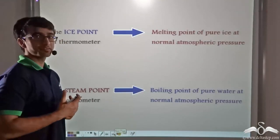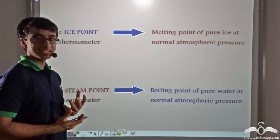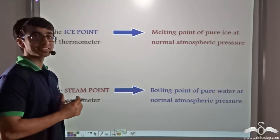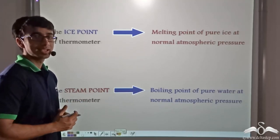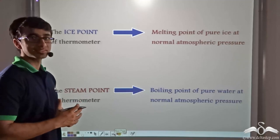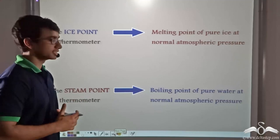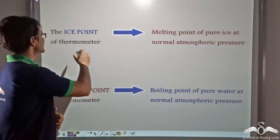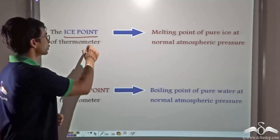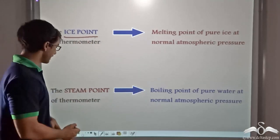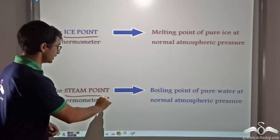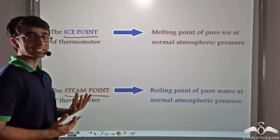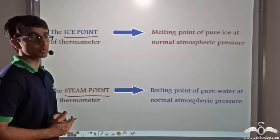Before we start grading and scaling the thermometer and measuring the temperature, there are two standard points that have to be considered. These two standard points are known as the ice point of the thermometer and the steam point of the thermometer. Now let us define the ice point and the steam point.